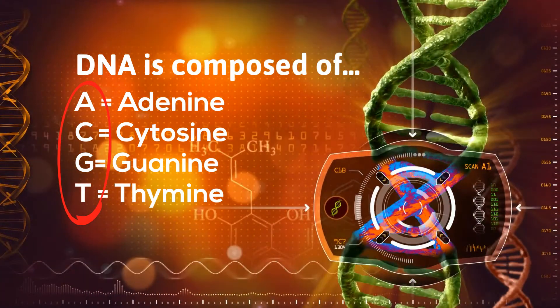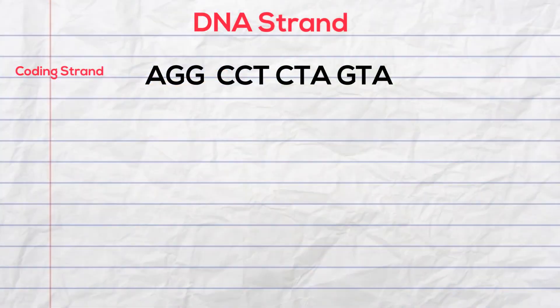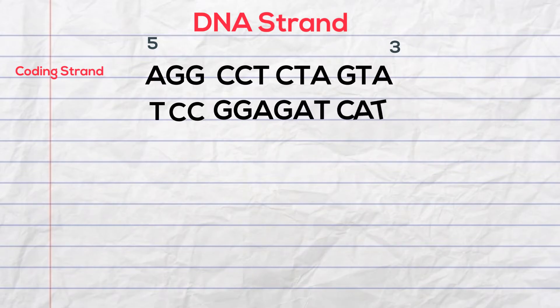A will always pair with T, and G pairs with C. So if you have this strand of DNA moving from 5 prime to 3 prime, the complementary strand will have A pair with T, G with C, and so on. The template strand is moving from 3 prime to 5 prime.